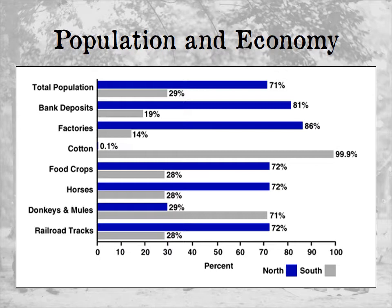The North had 71% of the total population, which meant more workers and more soldiers. They had 81% of all bank deposits — the North was simply richer than the South. Wars are won with money many times. The North also had more factories, which meant they could make more things needed to win the war.